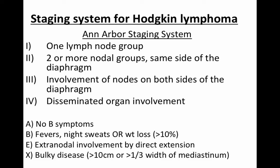Within each stage, there's either A or B. A means no B symptoms. B means the presence of fevers, drenching night sweats, or weight loss of more than 10%. These three constitutional symptoms are important because they correlate with prognosis — within each stage, if a patient has one B symptom, they have a worse prognosis. Subscript E means extra-nodal involvement by direct extension — for instance, if a periportal lymph node is directly involving the liver, that's stage one E.